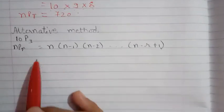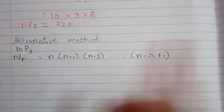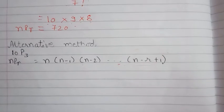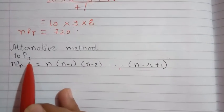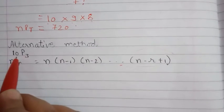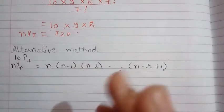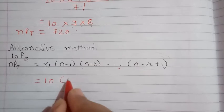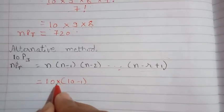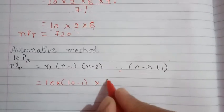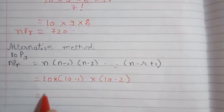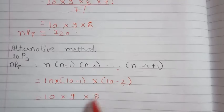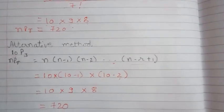There is also an alternative method. We know that nPr equals n times (n−1) times (n−2) and so on, with the last digit being n minus r plus 1. Here r is 3, so we expand: 10 multiplied by (10−1) multiplied by (10−2), that is 10 multiplied by 9 multiplied by 8, which again equals 720. Both methods are correct — you can use either.